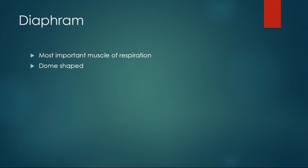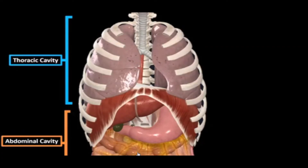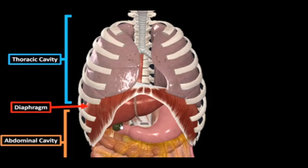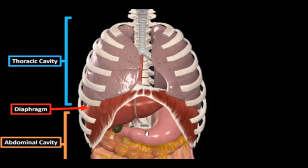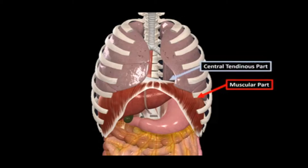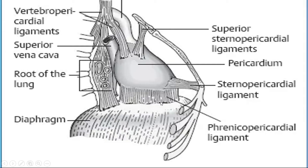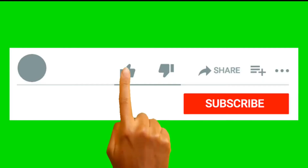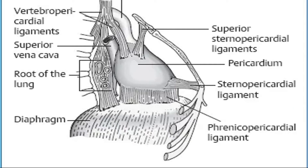This is the thoracic cavity and this is the abdominal cavity. Between them there is a muscle called the diaphragm, which divides these two cavities. The central tendon of the diaphragm is fused with the pericardiophrenic ligaments, which are strongly attached to and blend with the central tendon — that is how the central tendon firmly attaches to the heart and the lungs.